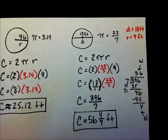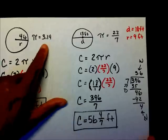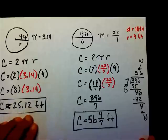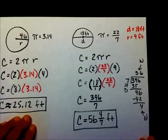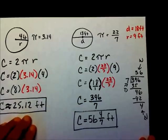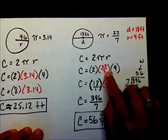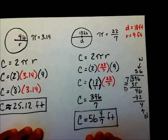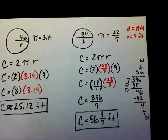Remember, if you use 3.14, this is a rounded circumference. If you use 22 over 7, that will be the exact circumference. Well, that's it for this video. Please visit mathwithmoon.org and leave your comments and suggestions. Have a great day. Bye.